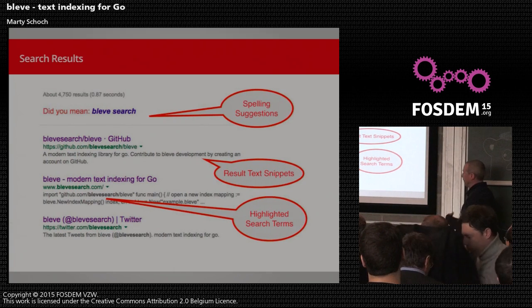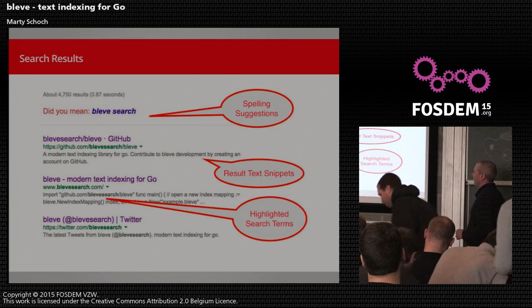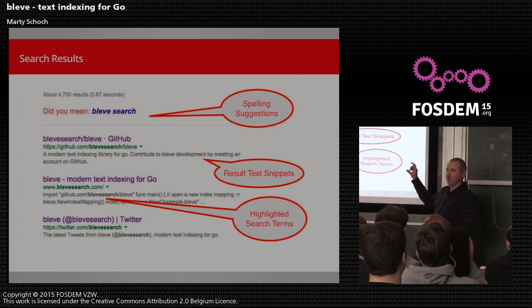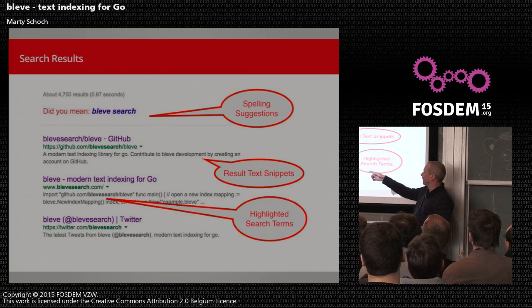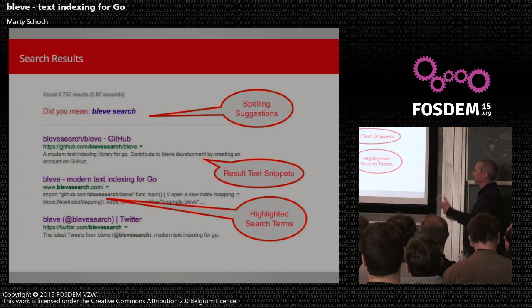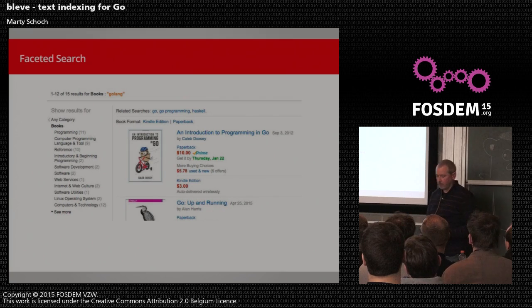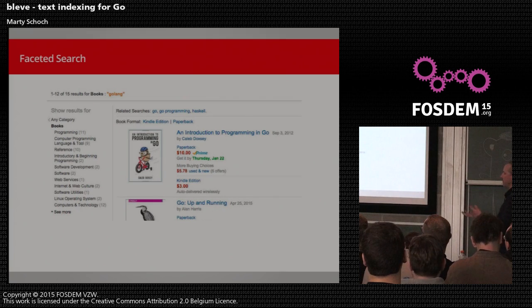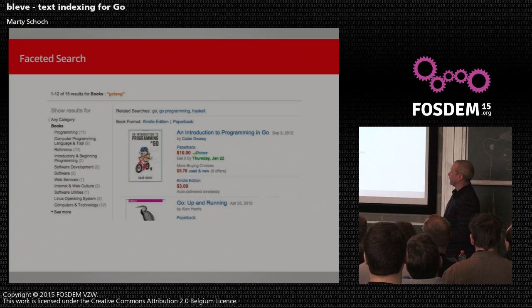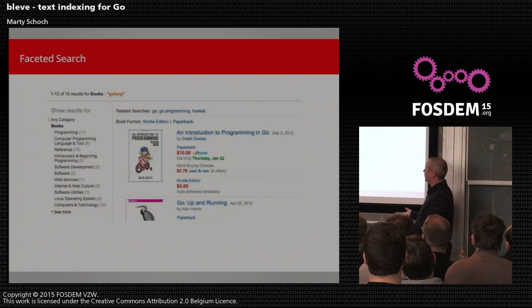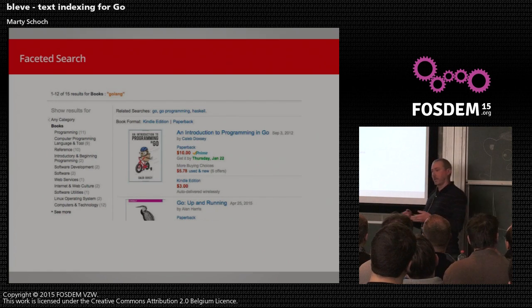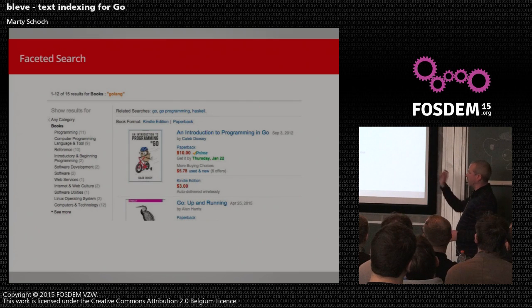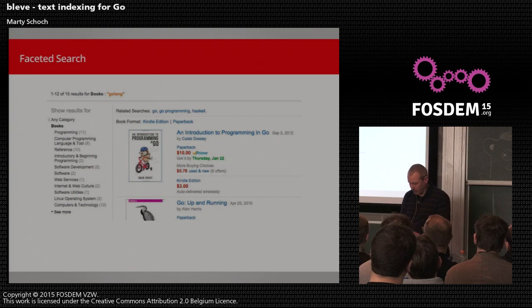When we look at search results, people expect spelling suggestions, little snippets of document content with their results to understand context, and highlighting of the search terms inside the snippet. Another really popular feature from the Lucene and Elasticsearch world is faceted search. Here you can see a search for Golang books on a major retailer, with categories on the left and counts telling you how many books are in each category — allowing faceted navigation by drilling deeper.